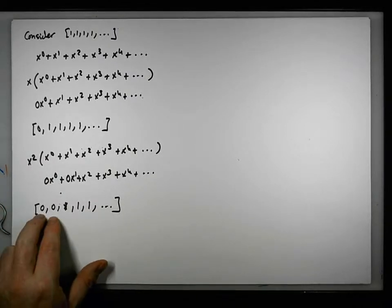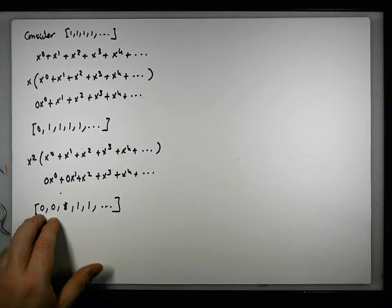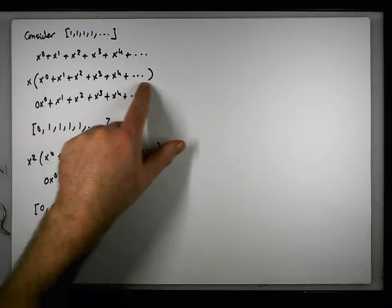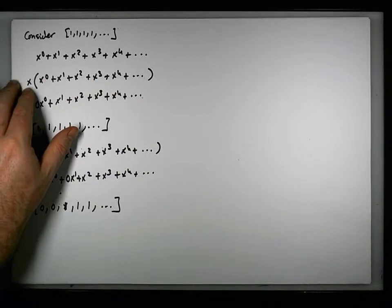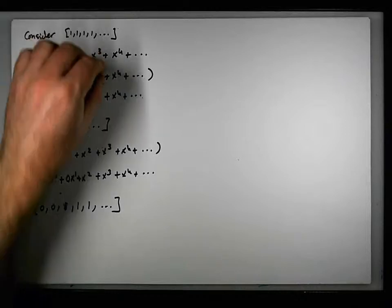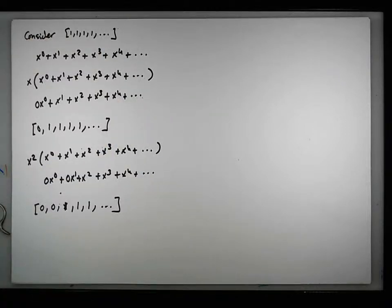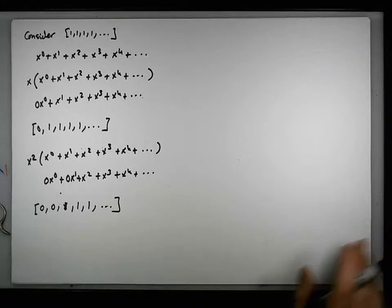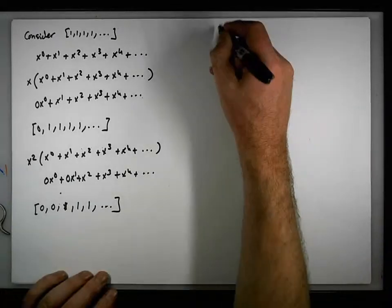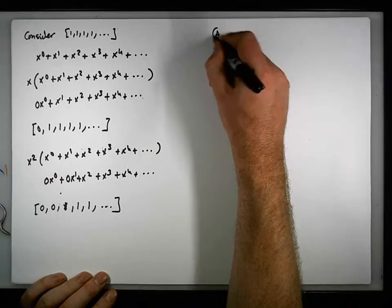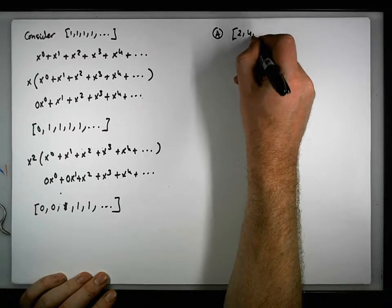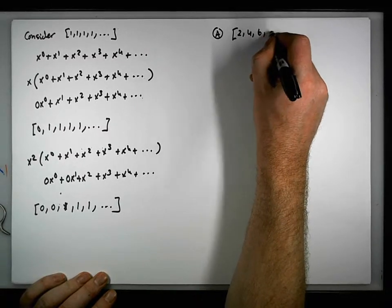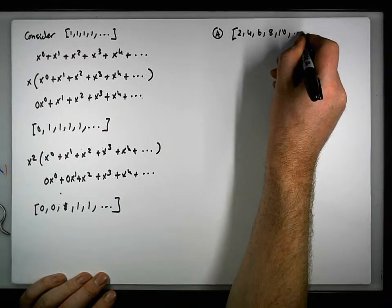So the effect of multiplying by x squared is to introduce two zeros. Because we multiplied the power series by x, we just multiply the generating function by x to give us the associated generating function. So I think now we're good to go.